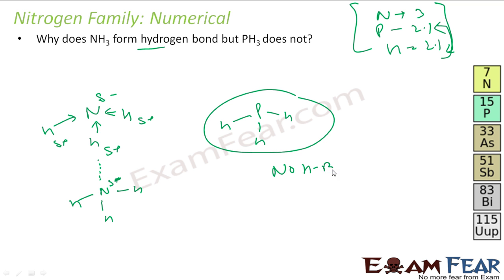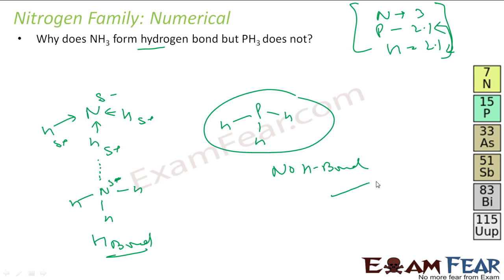Since there is no partial charge in PH3, there is no hydrogen bonding. In NH3, due to the electronegativity difference, H-bonds form. So NH3 forms H-bonds but PH3 doesn't.